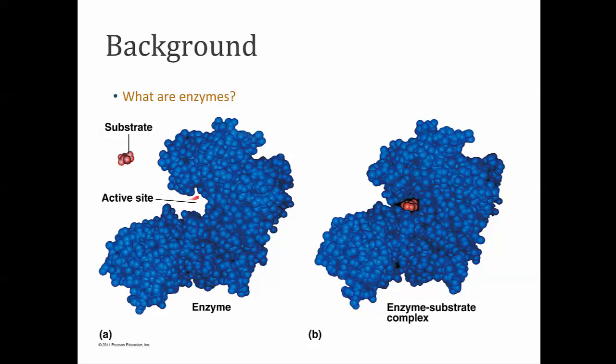Those enzymes have an active site which may bind to a specific substrate. Once that substrate attaches to the enzyme, the enzyme may again change shape slightly. They call that a conformation change, a change in the shape of the enzyme in relation to the binding of the substrate.